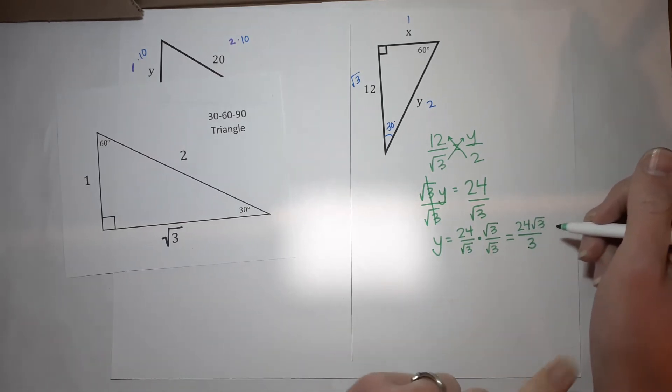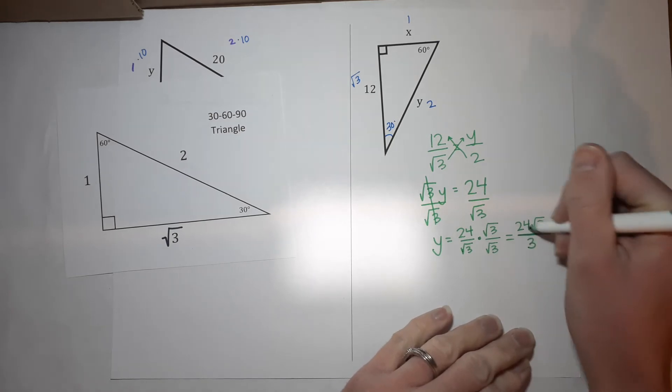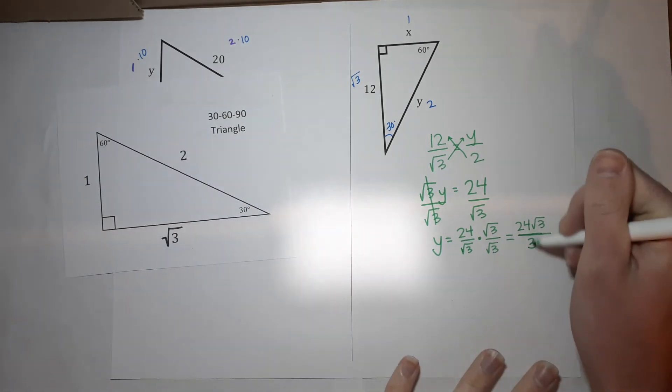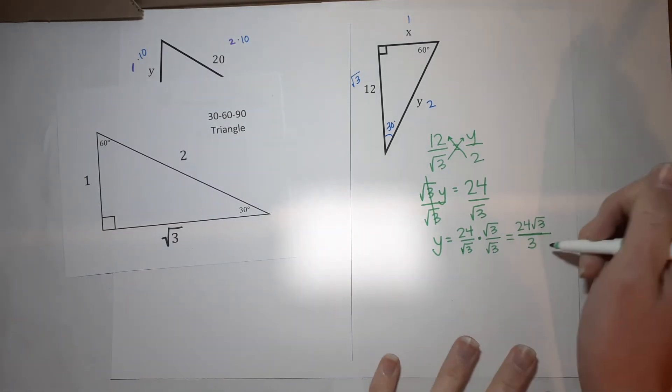Now the top is 24 square root of 3. Guess what? You're almost done. You're so close. If these numbers out here can simplify, we want to simplify them. So 3 goes into both of them. So 3 goes into 3 once.